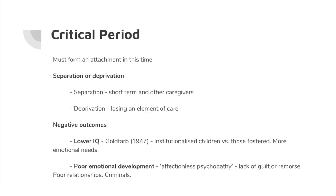Bowlby predicted there would be negative consequences if attachment is disrupted in the critical period. The outcomes thought to occur include: lower IQ — Goldfarb tested this, looking at institutionalised children compared to those fostered into families, finding more emotional needs and lower IQ in the institutionalised children, especially when disruption occurred in the critical period. There's also poor emotional development, and a term called affectionless psychopathy — having a lack of guilt, a lack of remorse, being emotionally disconnected from other people. Children with issues in the critical period tend to have poorer relationships and engage in more criminal behaviour.